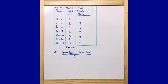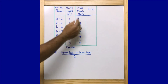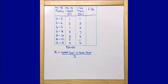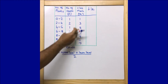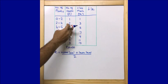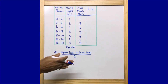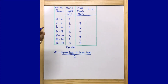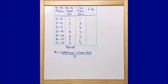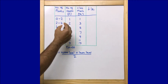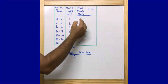Now, looking at the fᵢ and xᵢ columns, these figures are very small — we can directly multiply them verbally. So we follow the direct method. Whenever we see small numbers in fᵢ and xᵢ, we should always go for the direct method because we can easily find the answer within a few seconds. So: 1 × 1 = 1.